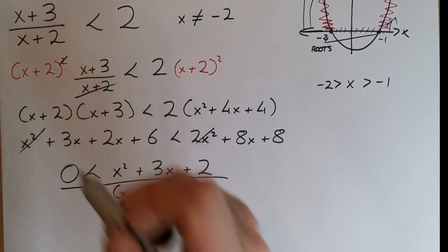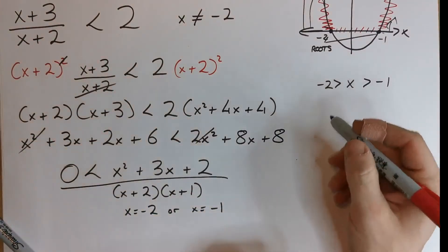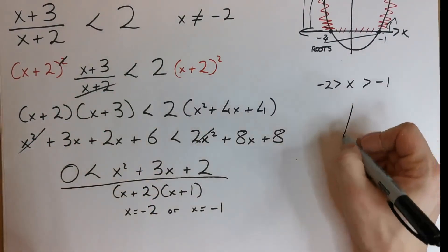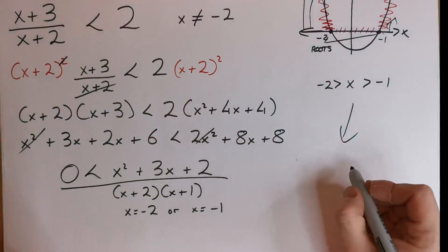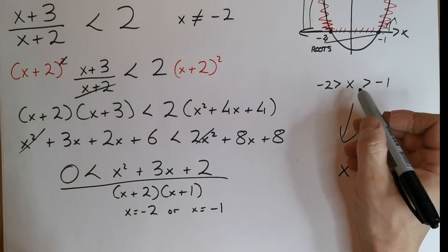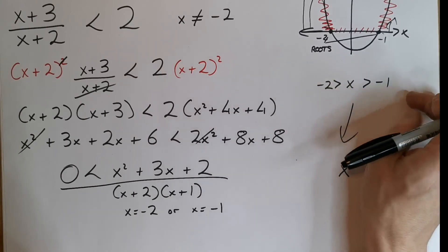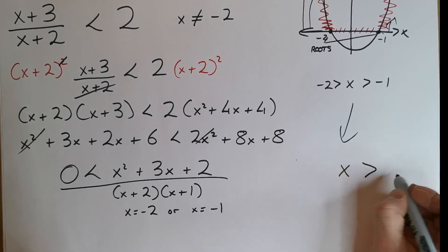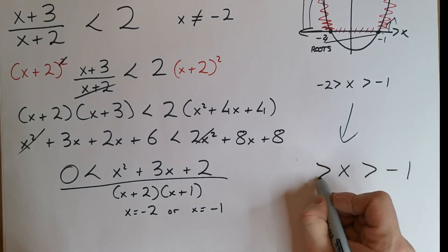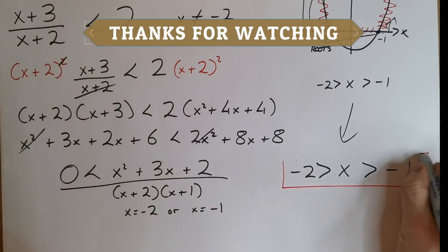So it turns out that the solution for this is actually this inequality here. To write our answer just a bit clearer, the solution for this is when x is - and I've written it this way, but it doesn't matter, you could write it the other way, but I like to write the bigger value up here to the right. So when x is greater than minus 1, but less than minus 2. And that is our answer.